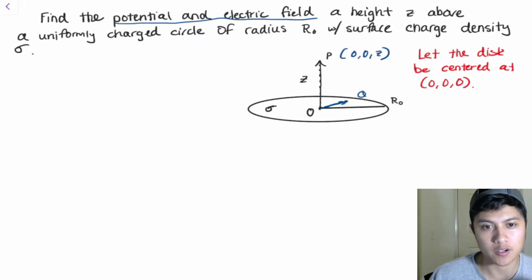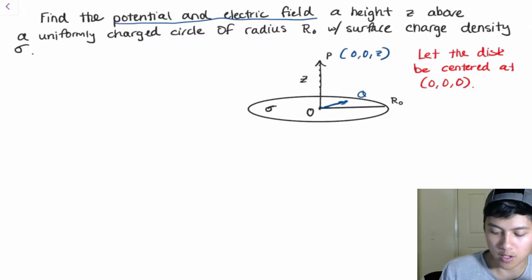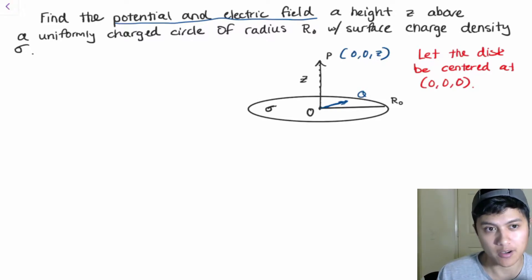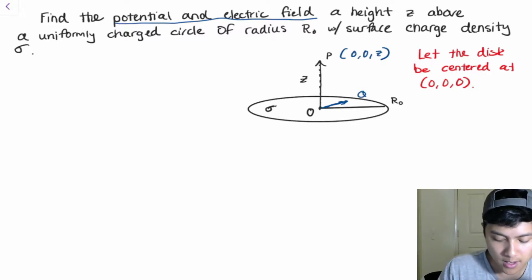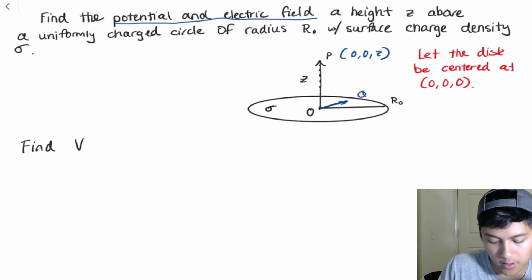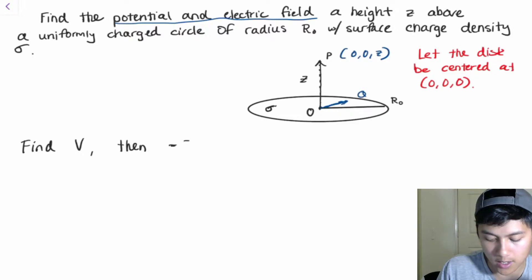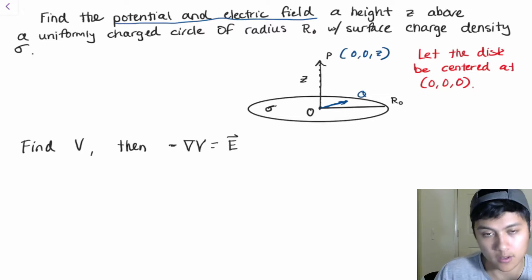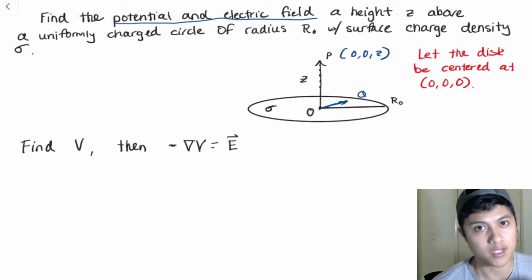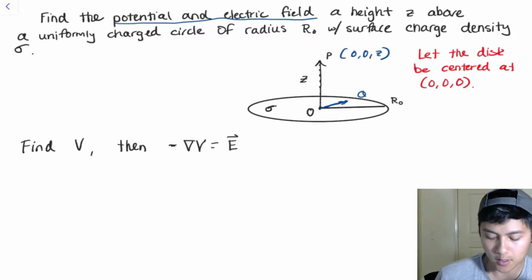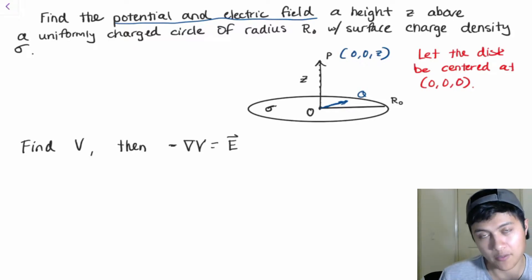So how are we going to start? I propose we solve for V first — the potential. V stands for the potential and E stands for the electric field. So we find V first, then find E. We know from electrodynamics that the negative gradient of V is equal to the electric field, so if we take the negative gradient of our potential we will get the electric field.